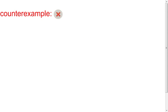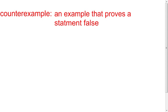A counterexample is nothing more than an example that proves something wrong — proves it to be false. If you can come up with one example, and one example only, that proves something false, you've come up with a counterexample. It only takes one example to prove something false. There might be a million examples that prove something true, but if you find one that proves it false, the whole statement is false.